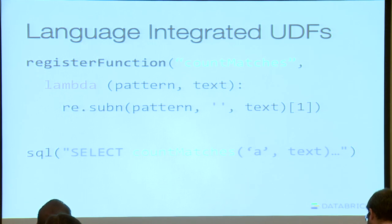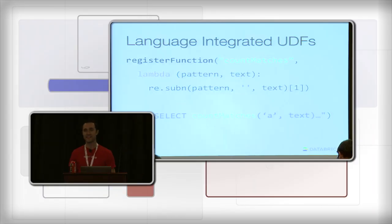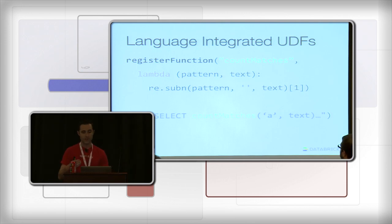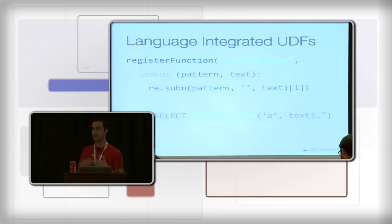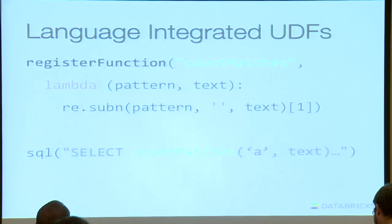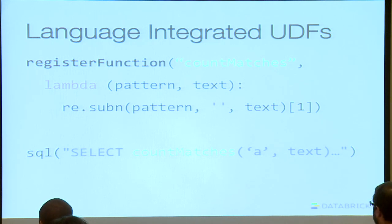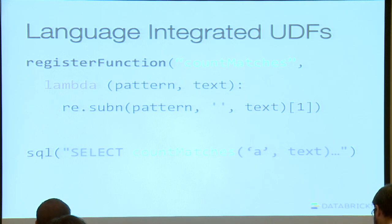Now I want to talk about mixing processing — moving back and forth between a full-featured programming language and SQL. One of the features we're adding in Spark SQL 1.1 is language-integrated UDFs. In a typical database system, when you want to create a UDF you have to implement some class, there's a lot of boilerplate, you compile it into a jar, upload it to the cluster, and hope it got registered correctly. In Spark SQL, all you need to do is call register function and pass a lambda. This works in both Python and Scala, and immediately becomes accessible in your SQL queries using Spark's closure-shipping magic.